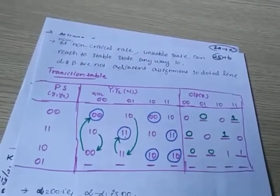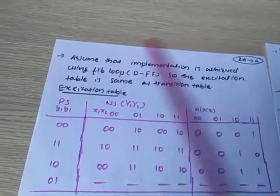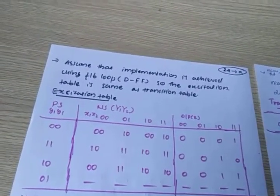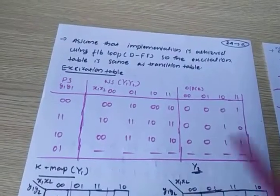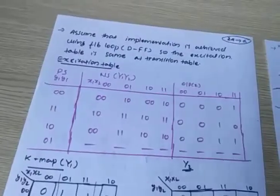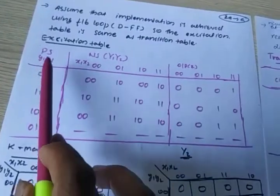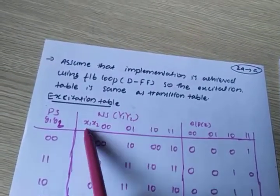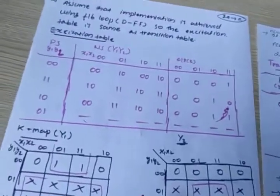We need to write the circuit for that particular problem, so we need the excitation table. I wrote the transition table; next is the excitation table. Here I am choosing the D flip-flop, because with D flip-flop the excitation table is the same as the transition table. If the question specifies a particular flip-flop you must use that, but for simplicity I am choosing D flip-flop. This is the present state Y1, Y2; next state Y1, Y2; inputs X1, X2; and the output Z.